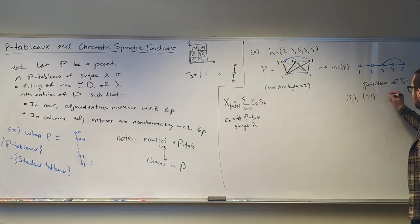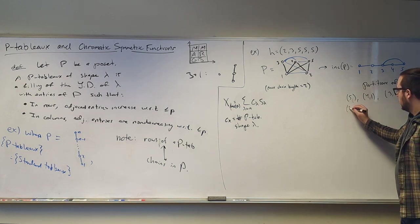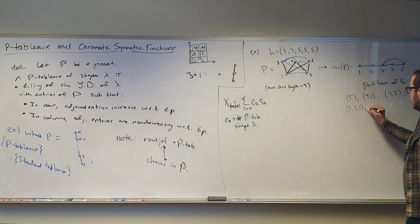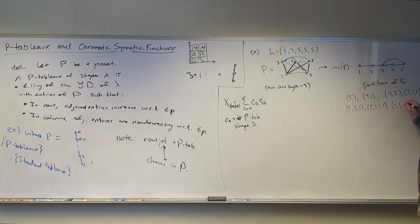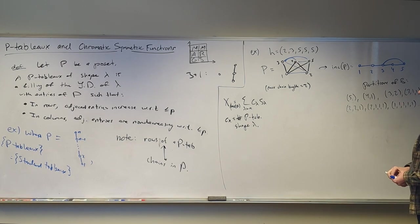Let's list out all of our partitions of the number 5. So, we have 5, 4, 1, 3, 2, 3, 1, 1, 2, 2, 1, 2, 1, 1, 1, and all 1s. And these, unlike sets tableau, correspond to row lengths. So, the partition 5 is a row of length 5. The partition 1, 1, 1, 1, 1 is 5 rows of length 1.